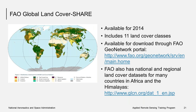The FAO Global Land Cover Share Database provides a set of major thematic land cover layers resulting from a combination of best available high-resolution national, regional, and sub-national land cover databases produced at a resolution of one kilometer. The data includes 11 land cover classes and are distributed in separate layers in GeoTIFF format through the FAO GeoNetwork Portal. The FAO also has national and regional land cover datasets for many countries in Africa and the Himalayas.